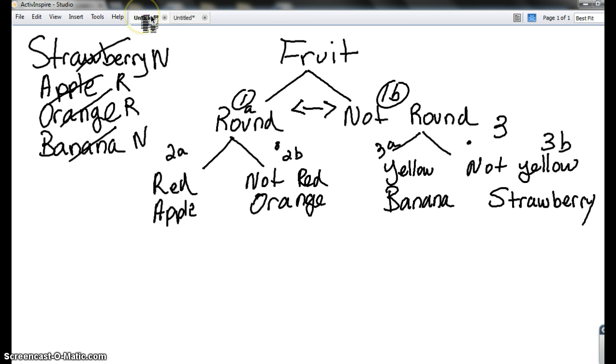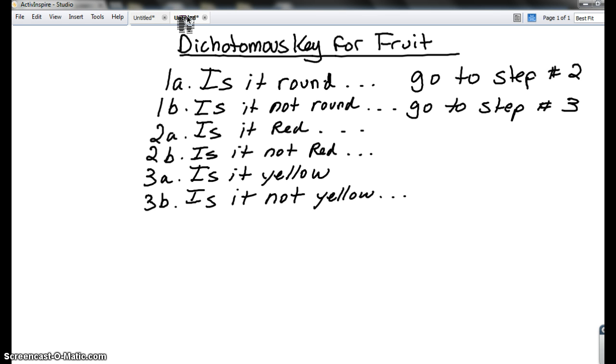Alright. Did we have to make any more steps? No. Okay. So, if it's red, we identified the fruit as what? An apple. And if it was not red, we identified it as orange.